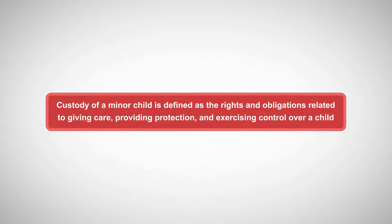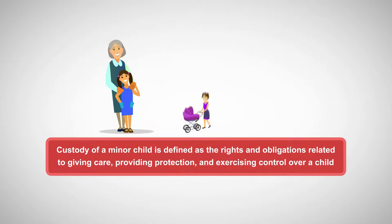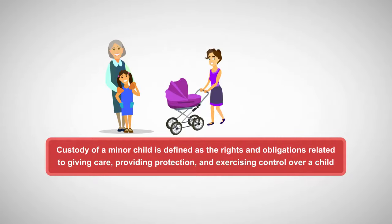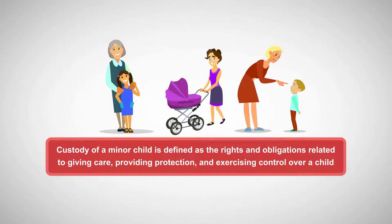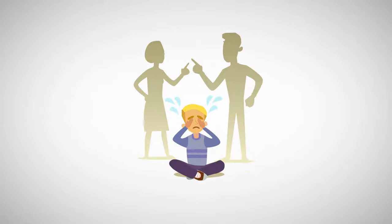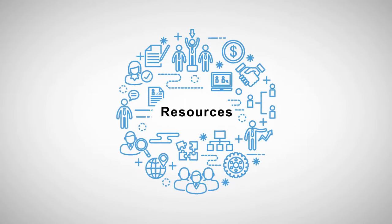Custody of a minor child is defined as the rights and obligations related to giving care, providing protection, and exercising control over a child. Because the different facets of custody are often at issue at the same time, custody disputes are frequently emotionally charged. Reaching a determination on an agreement to cover custody is challenging, but numerous resources exist to help guide courts and parents.